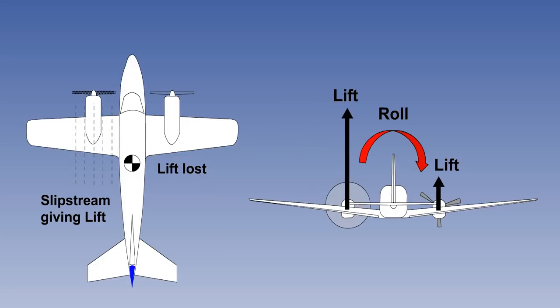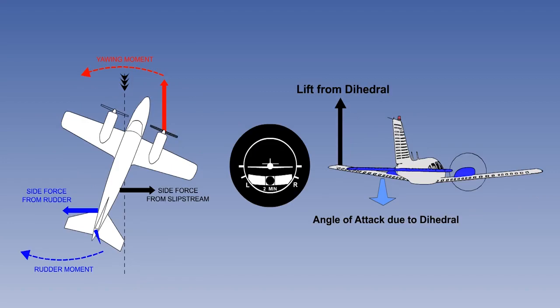Any propeller-driven multi-engine aircraft will suffer a loss of lift from the slipstream-induced faster airflow over the wing behind the failed engine. The reduction in total lift will give a tendency to descend, but more importantly, a roll towards the failed engine. The roll is exacerbated if flaps located behind the failed engine and its counterpart on the live side are down, owing to the higher CL. If the aircraft is being flown wings level asymmetric, it will be side-slipping, and the dihedral of the forward wing — in this case the port or left wing — will generate more lift, compensating in part for the loss of lift from the slipstream.